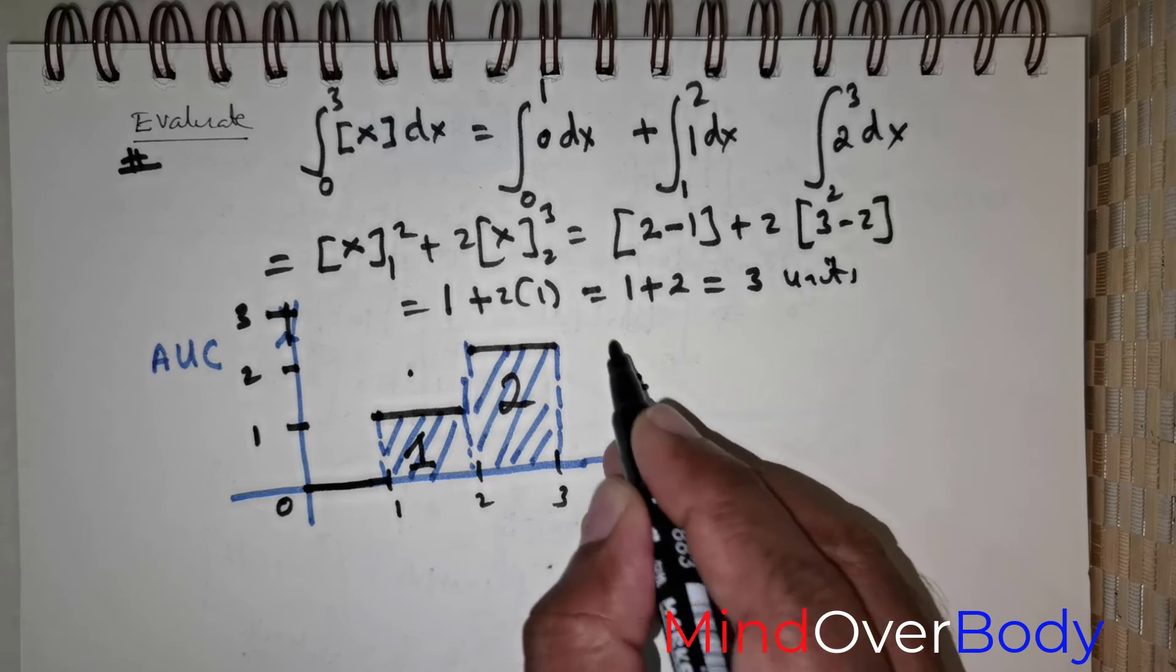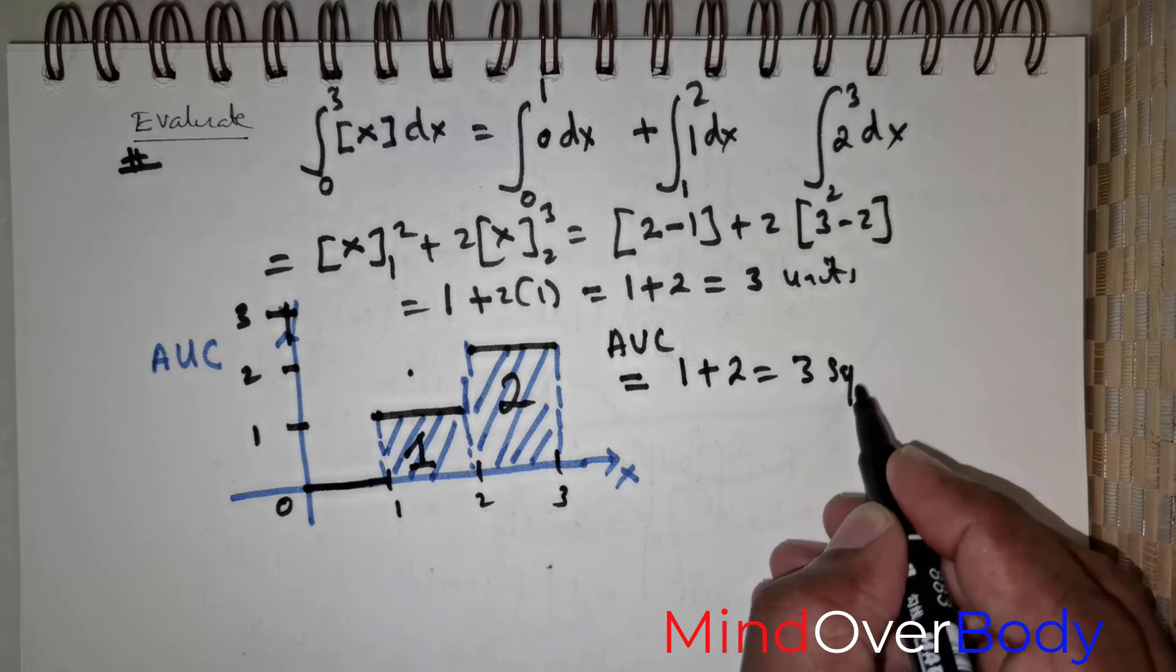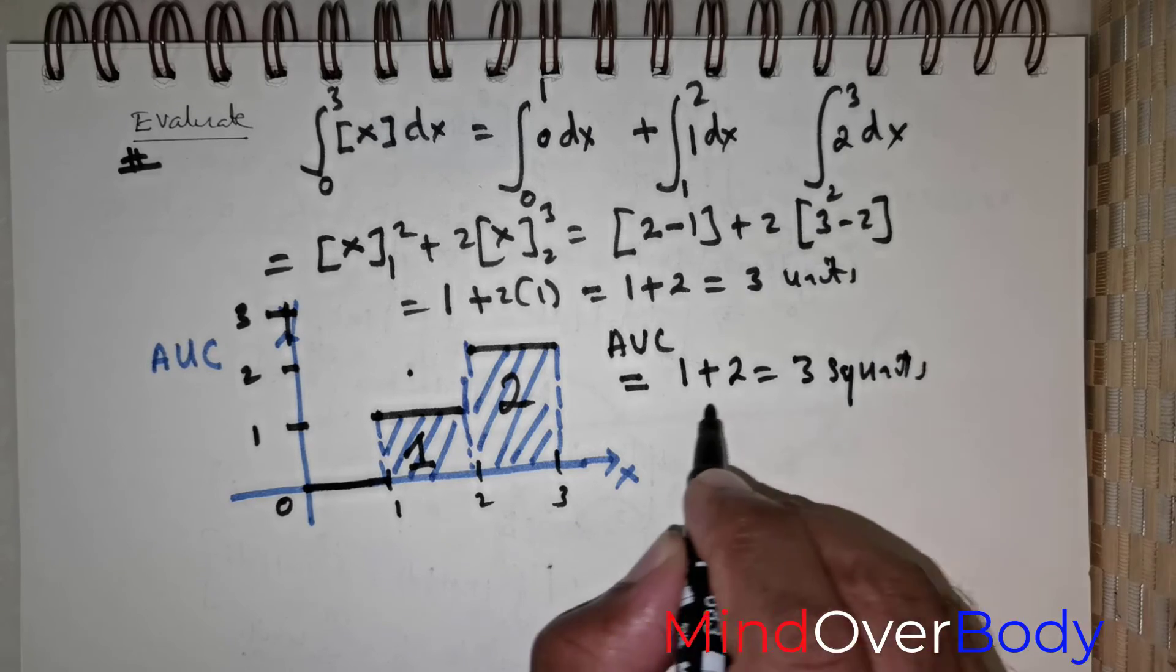The total area under the curve is going to be 1 positive 2, which is equal to 3 square units. So, that would be the solution.